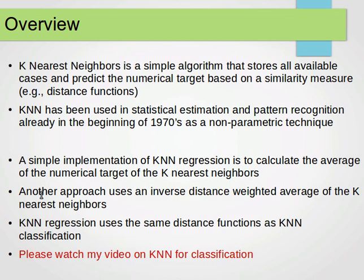It's quite easy to understand and to implement. A simple implementation of KNN regression is to calculate the average of the numerical target of the k-nearest neighbors. So this is the secret, it's calculating the average of the numerical target of the k-nearest neighbors.